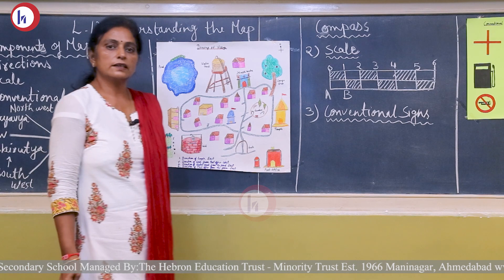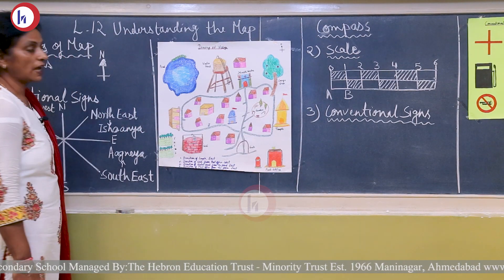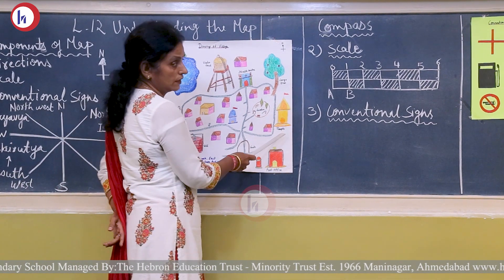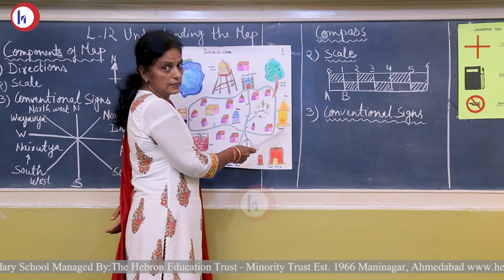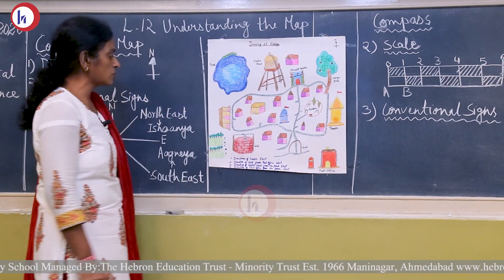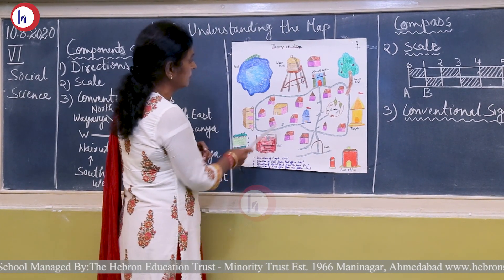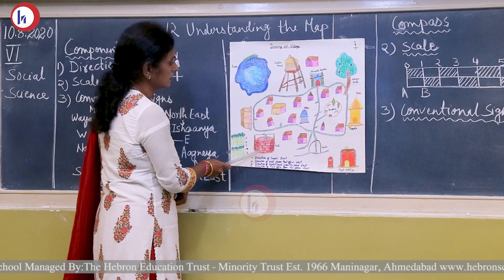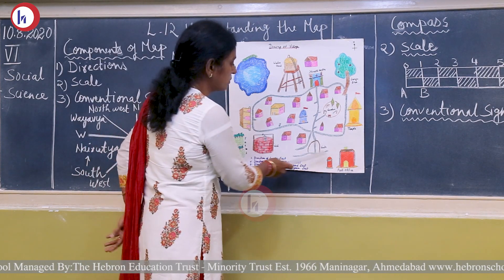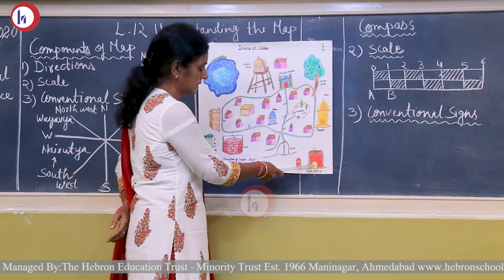Let us learn how to find out the direction. Direction of the temple: first, see where the temple is — it is on the east side. Direction of the well from the post office: the well is in the southwest direction, and the post office comes in the opposite direction, which means the southeast side.